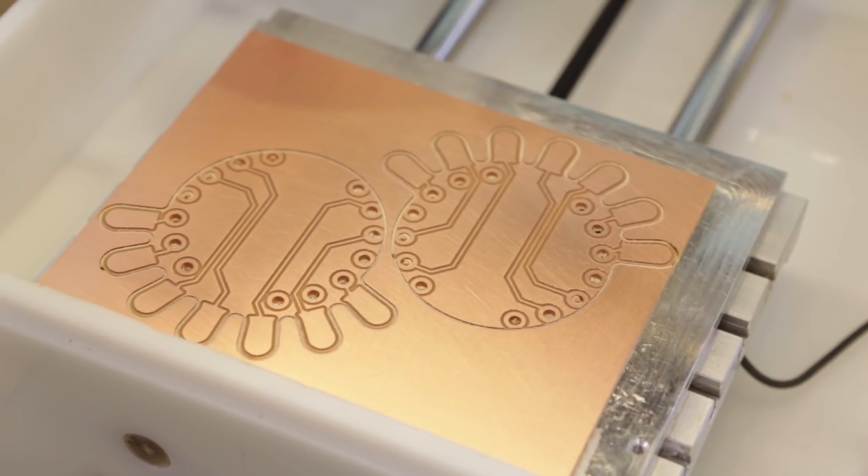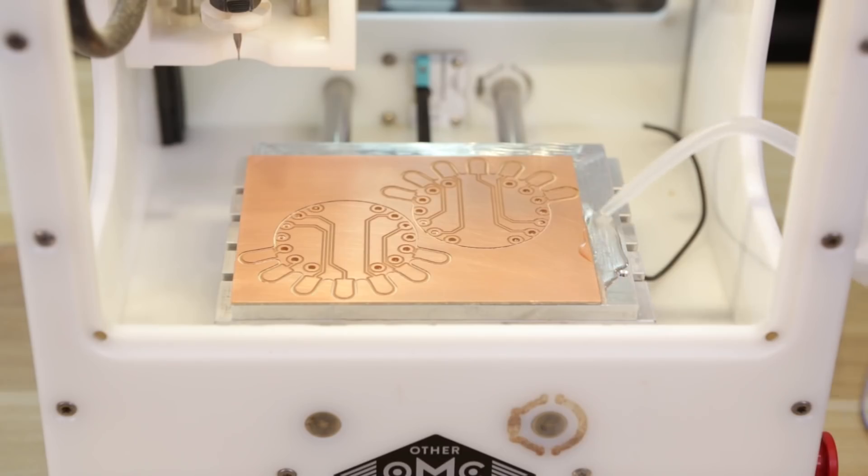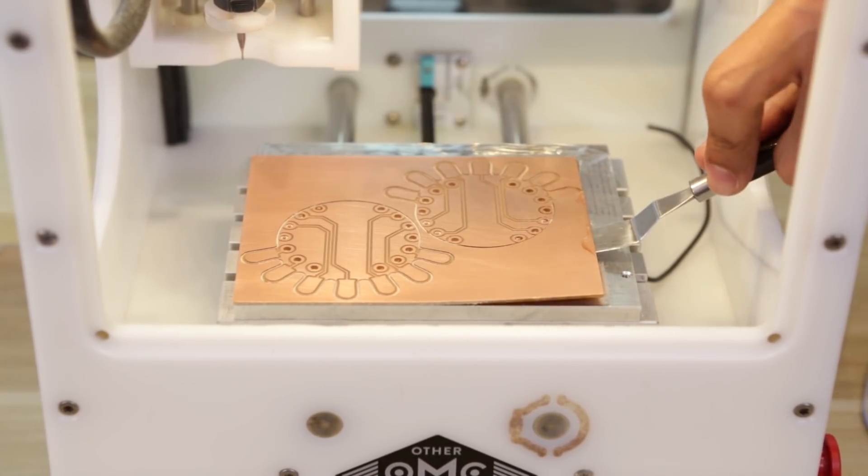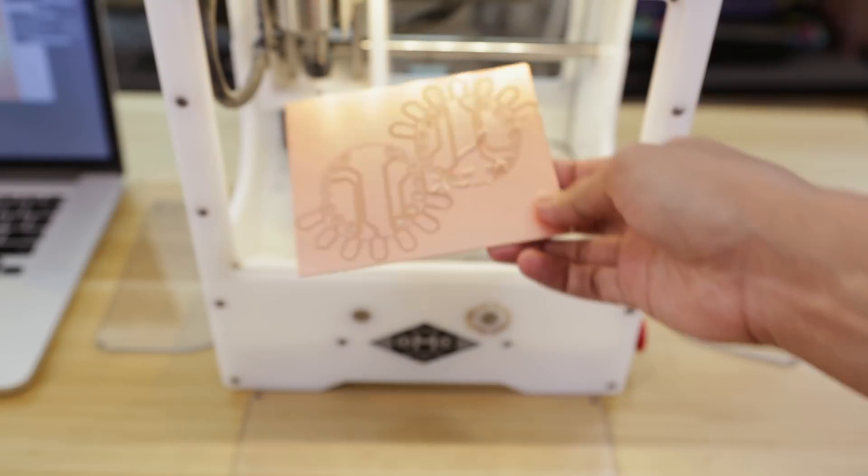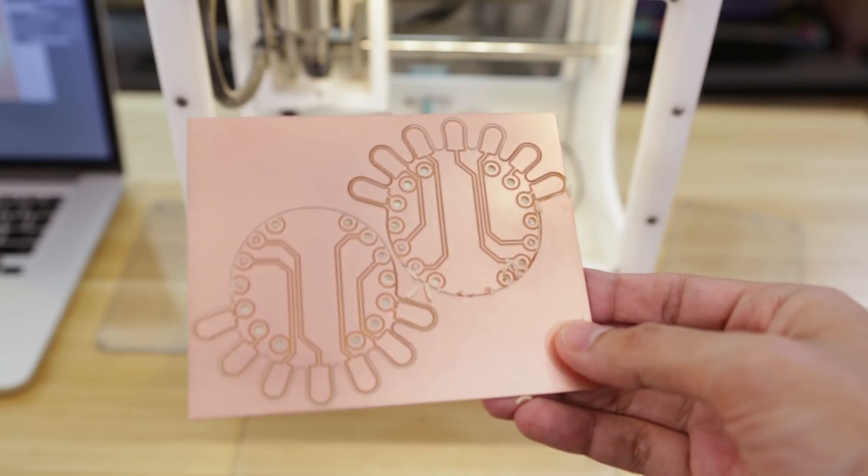The PCB is secured to the spoil board using double sided scotch tape. I like to use alcohol in a squeeze bottle to soften the adhesive, and to make removal easier I use a thin pallet knife to get in between the strips of tape.